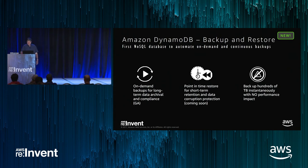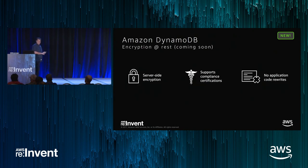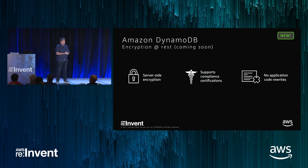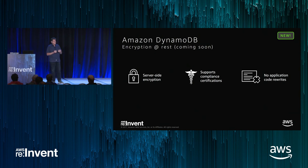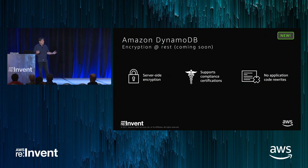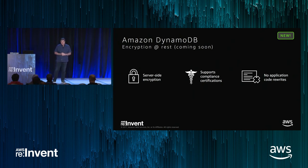With on-demand backups and point-in-time restore, I think we cover all of your backup, recovery, and protection needs. We're also announcing encryption at rest available soon. All data which is persisted will be encrypted using your service default KMS keys. You don't have to do any work, manage anything, or change code. With this you can meet your compliance requirements and ability to meet regulatory requirements for having data at rest encrypted.